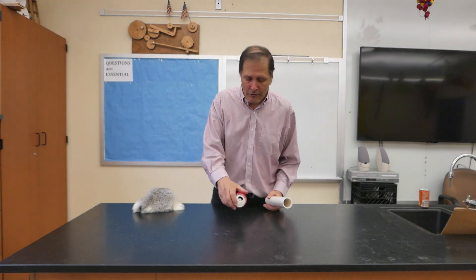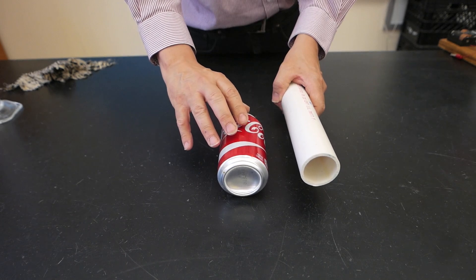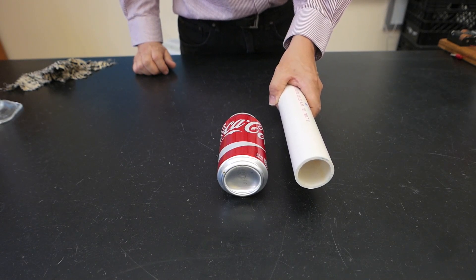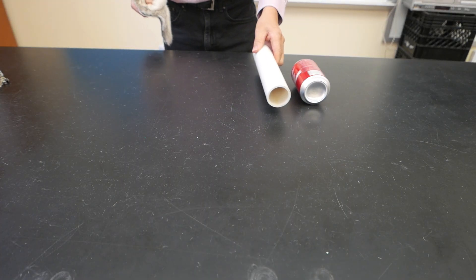Now let's go back to that moving of the can across the table. Here we'll try the can with an uncharged PVC pipe. Nothing happens because both objects are neutral. Let's put a charge on it. And now I can pull the can across the table.